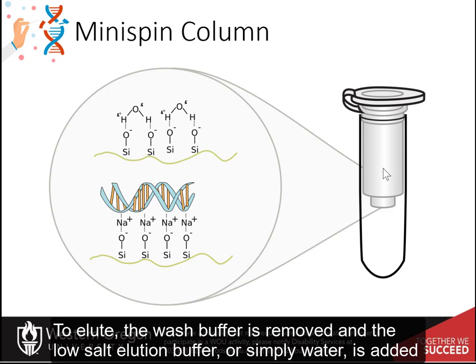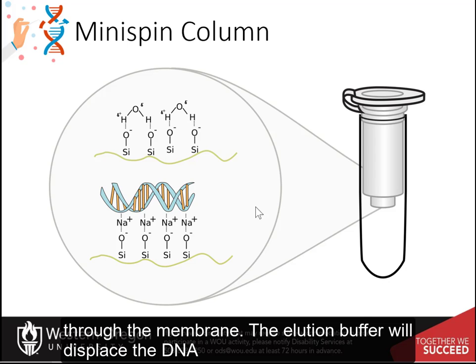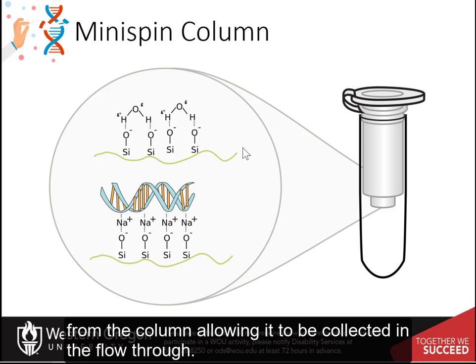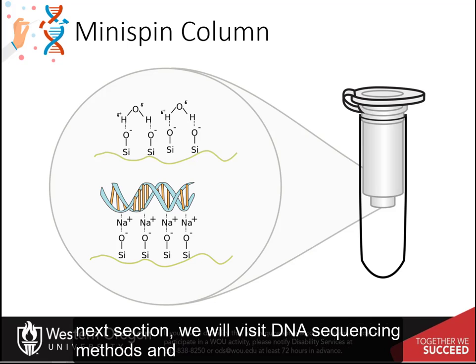To elute, the wash buffer is removed and a low-salt elution buffer, or simply water, is added to the column. The column is put into the centrifuge again, forcing the elution buffer through the membrane. The elution buffer will displace the DNA from the column, allowing it to be collected in the flow-through. These are the three major methods of DNA isolation that are most commonly used. In the next section, we will visit DNA sequencing methods.